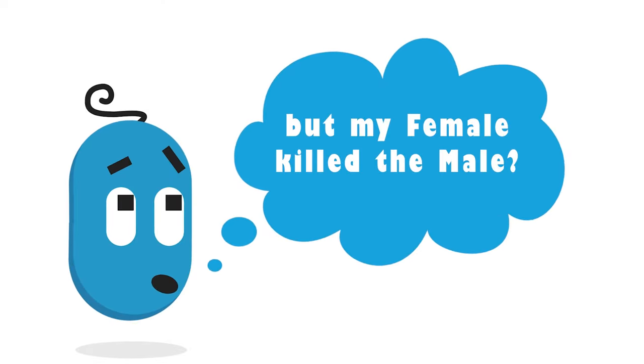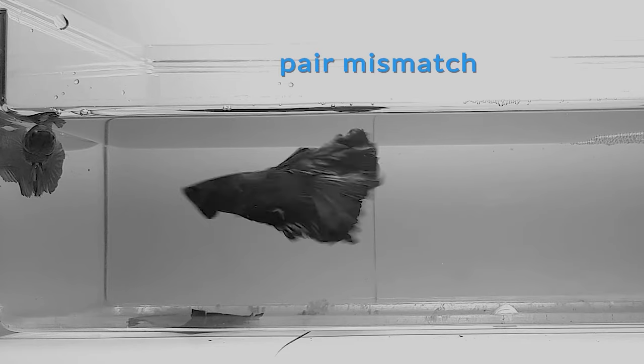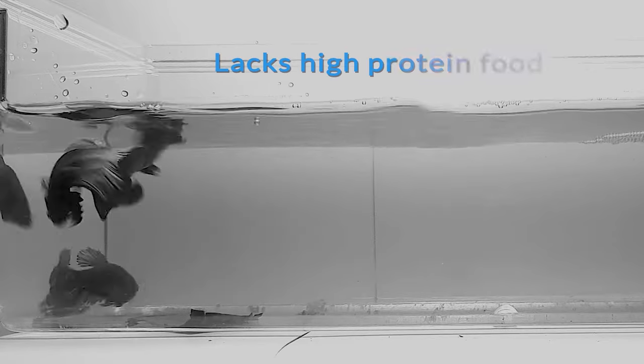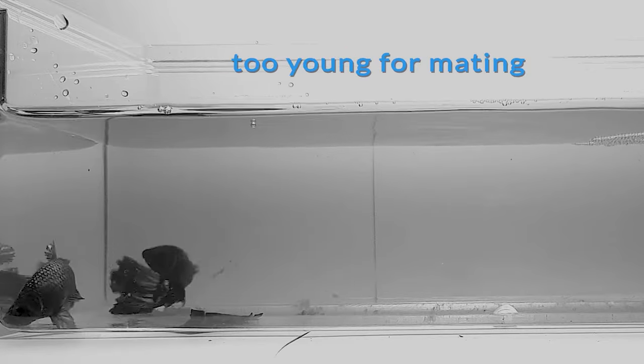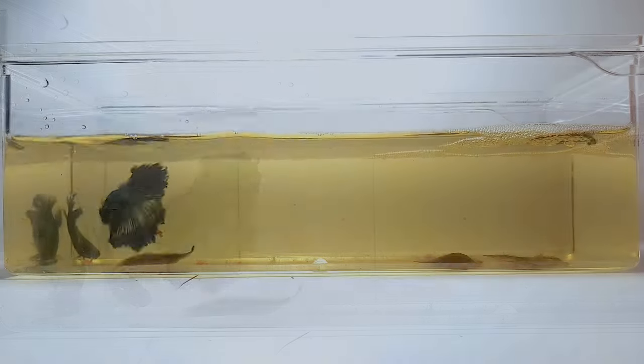But my female killed the male when I was breeding. This could be that they're a mismatch. The female is too big and too aggressive for the male. Or either of them hasn't eaten high-protein foods, or either one of them is too young for mating. She will soon get dominated by the male. And that brings us to our next step.